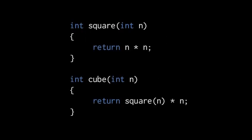So here we have two functions, one called square, one called cube, both returning an int, and both taking one parameter, an int named n. And square has one statement in the body that simply returns n times n, and cube has one statement that returns n times the square of n.